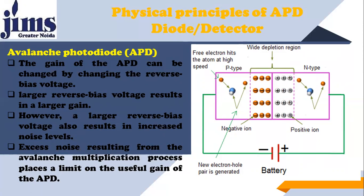In the avalanche photodiode, the gain of the APD can be changed by changing the reverse bias voltage. The reverse bias voltage decides the amount of gain you want. A larger reverse bias voltage results in a larger gain. However, a larger reverse bias voltage also results in an increased noise level, because the random motion of free electrons creates a noise problem. Excess noise resulting from the avalanche multiplication process places a limit on the useful gain of the APD.